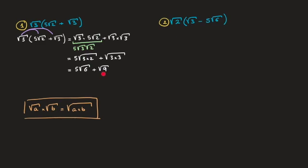Since 9 is a perfect square — indeed 9 equals 3 times 3 — we can simplify further and state our final answer as 5 times the square root of 6, so 5√6 plus 3. And that's the answer.